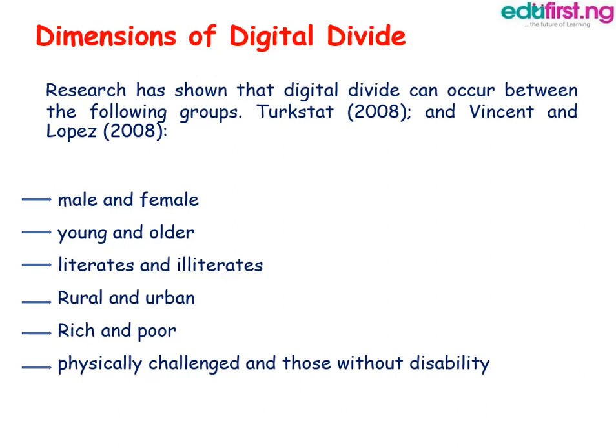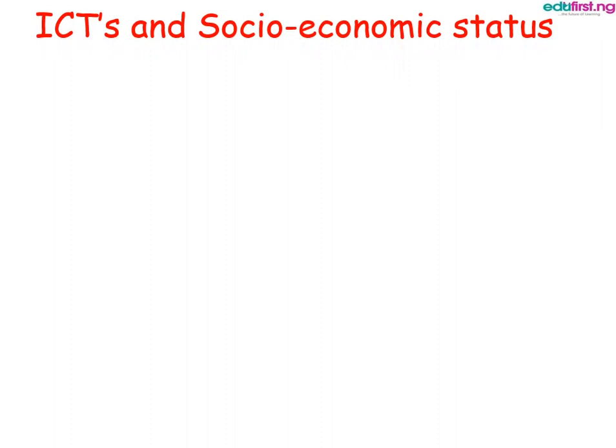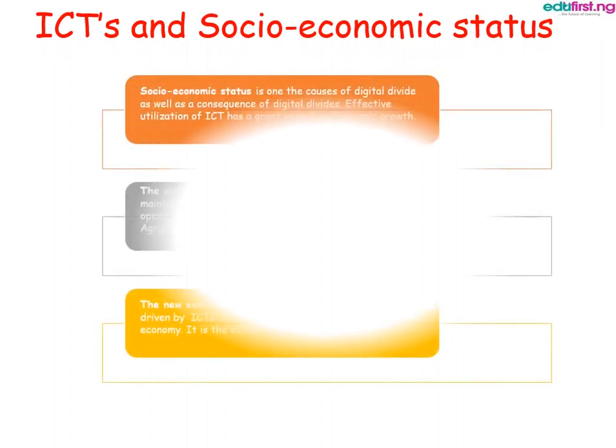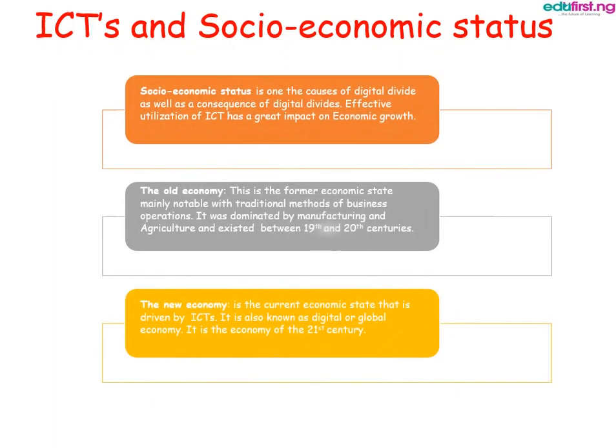Among the rich and poor, the rich use more digital devices as a result of their high level of affordability. Among the physically challenged and those without disability, the physically challenged tend to use less ICTs. And socioeconomic status is one of the causes of digital divide.